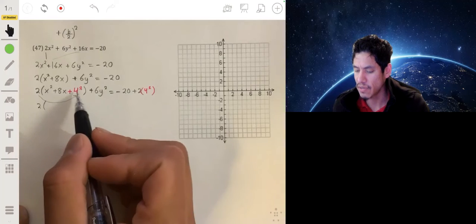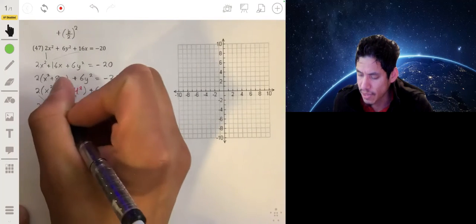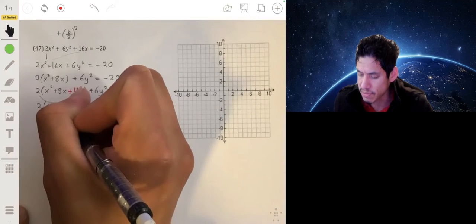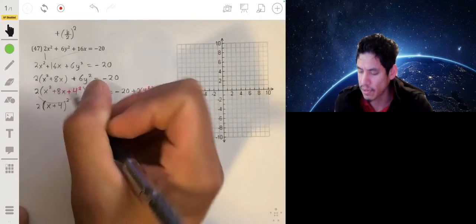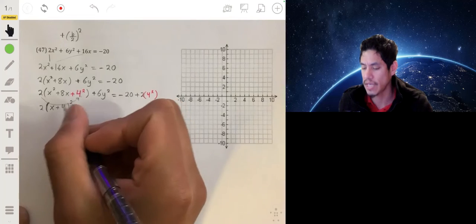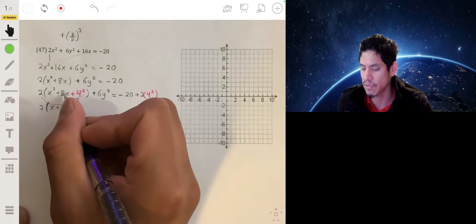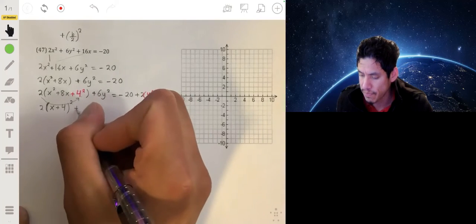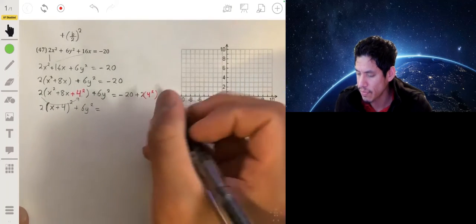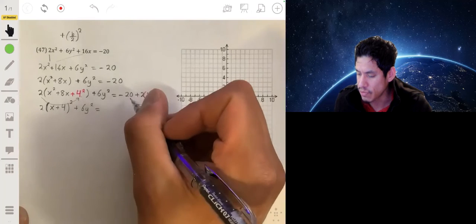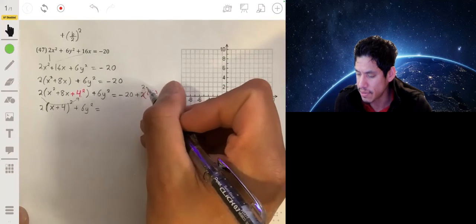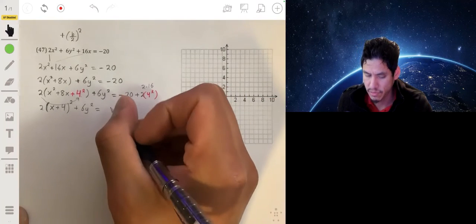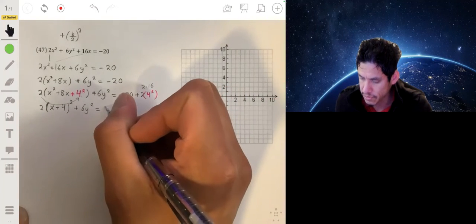Now as we continue completing the square, this allows you to factor this into x plus 4 squared. x plus 4 squared will give me x squared plus 8x plus 16. So plus 6y squared, this will be negative 20 plus 2 times 16, so negative 20 plus 32, so I'll get 12.